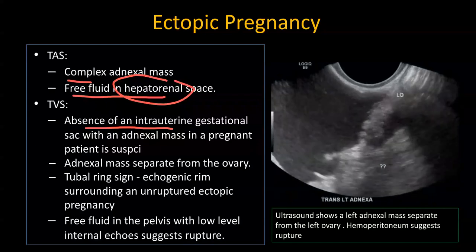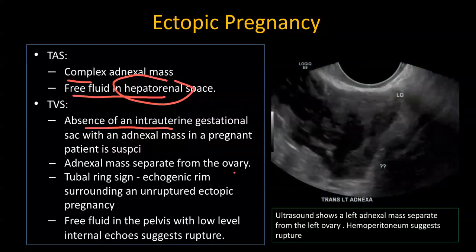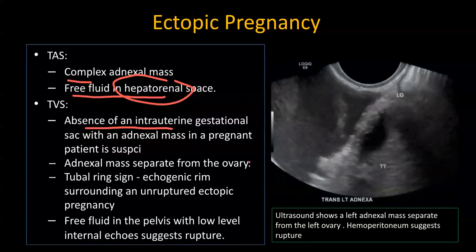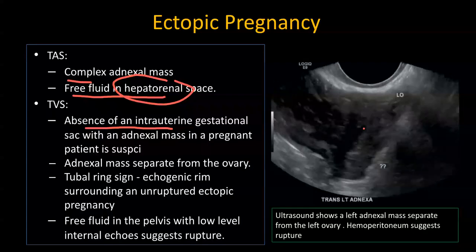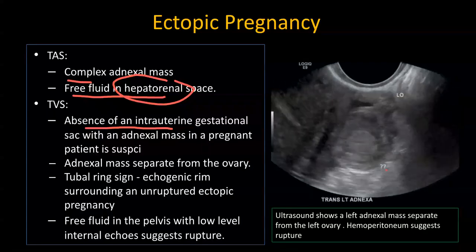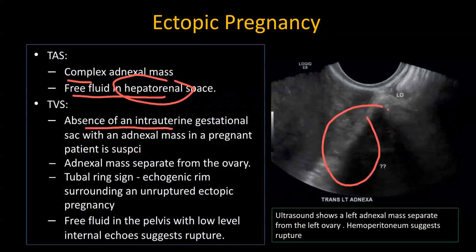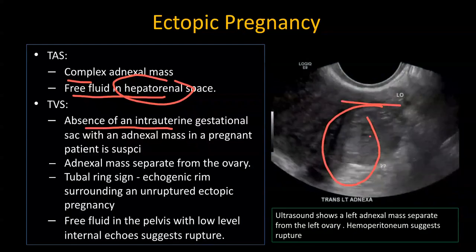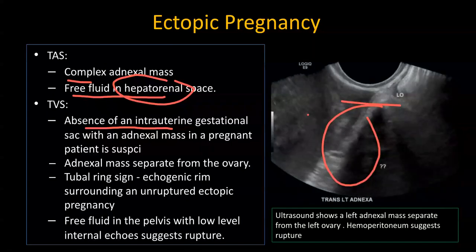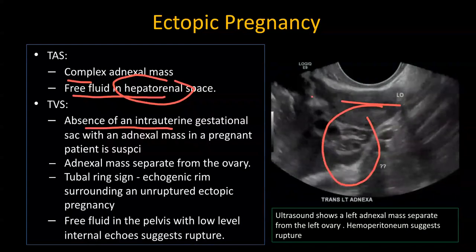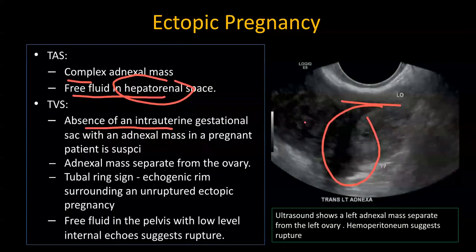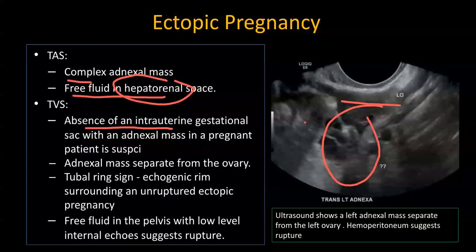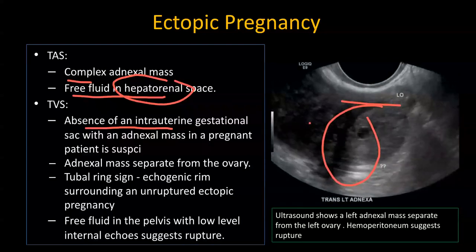Although an empty uterus can be seen very early in pregnancy, in a pregnant patient without an intrauterine gestational sac, you should be worried about ectopic pregnancy. The other key finding is an adnexal mass separate from the ovary. In this cine clip, there is an adnexal mass separate from the left ovary — the mass is heterogeneous. Also noted is moderate pelvic free fluid with low-level internal echoes, suggesting hemoperitoneum. This was a case of a ruptured left adnexal ectopic pregnancy.